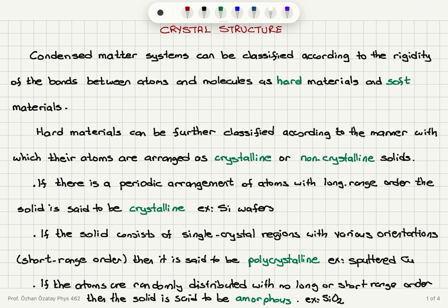In condensed matter physics, we classify materials according to the rigidity of the bonds between atoms and molecules. This affects the flexibility of the bonds and changes the rigidity of the material. If the bonds are very strong, we call the materials hard materials, and if the bonds are flexible, they are called soft materials.